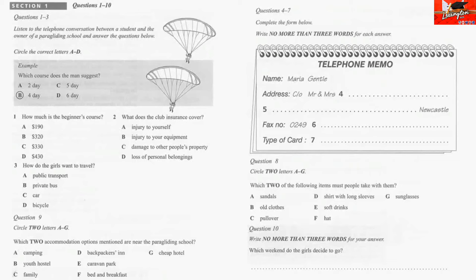The post office box address is probably best. It's P.O. Box 676, Newcastle. Is there a fax number there? Because I could fax you the information. Yes, actually there is. It's 0249, that's for Newcastle, and then 775431.